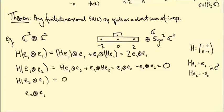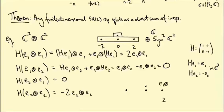Similarly, H(E₂⊗E₁) = 0 by the same computation, and H(E₂⊗E₂) = −2(E₂⊗E₂). So we confirm the weight space decomposition: in weight 2 we have E₁⊗E₁; in weight −2 we have E₂⊗E₂; and in weight 0 we have both E₁⊗E₂ and E₂⊗E₁ spanning a two-dimensional weight space.